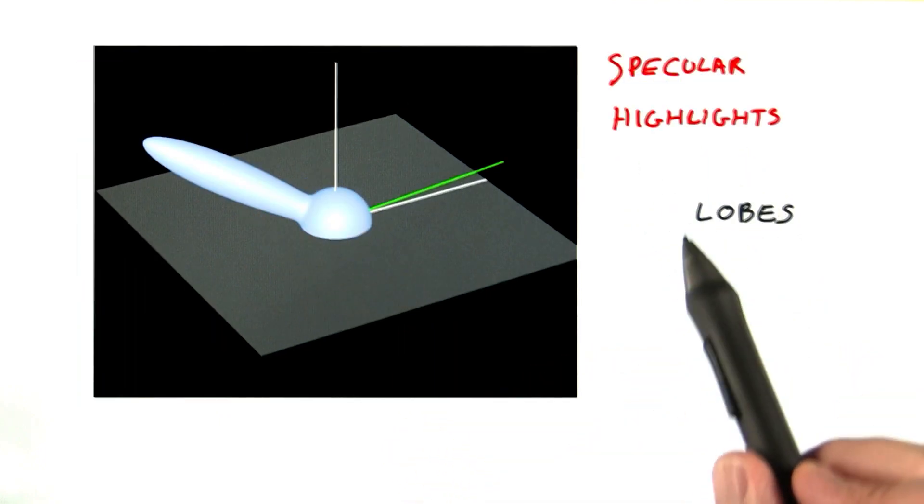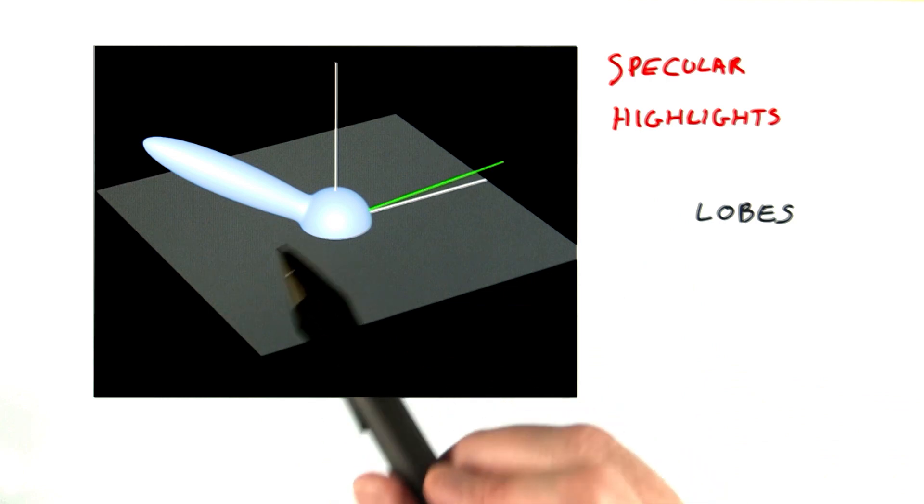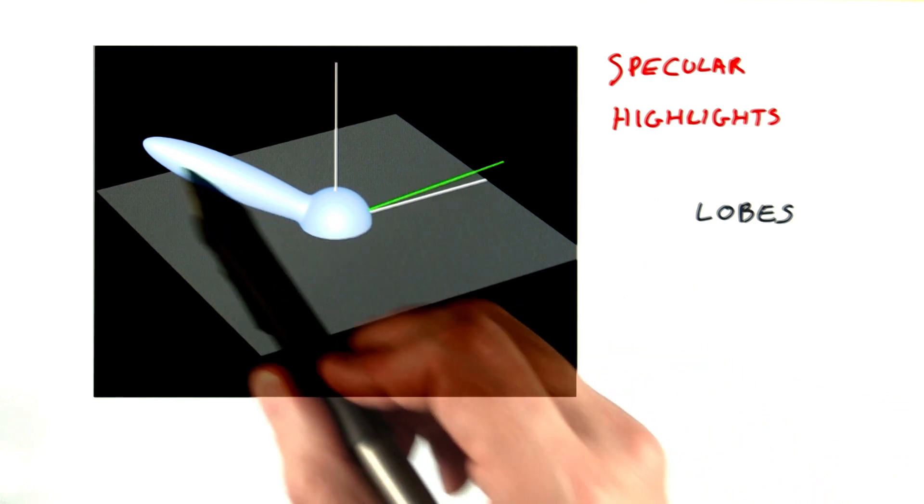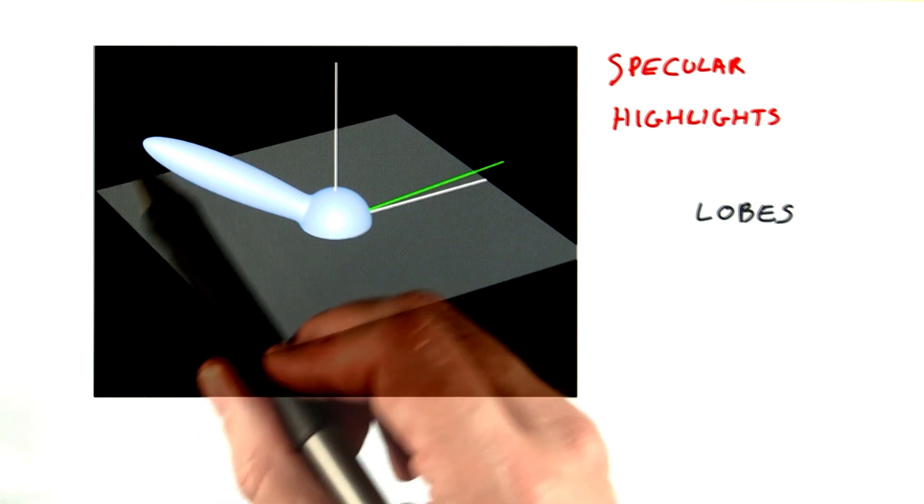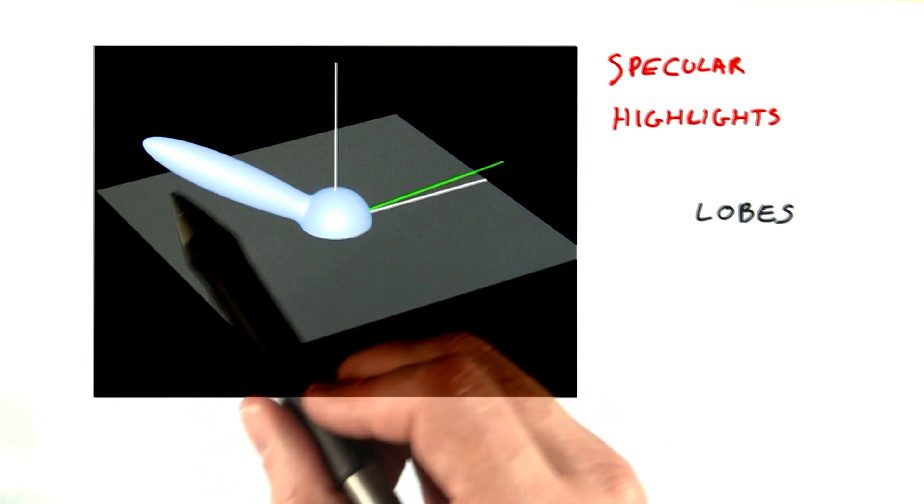Specular highlights are represented by lobes. This distribution represents a glossy surface, where light is reflected in a general direction. The light's direction determines where most of the light's energy is reflected. If the lobe gets wider, the specular reflection spreads out.